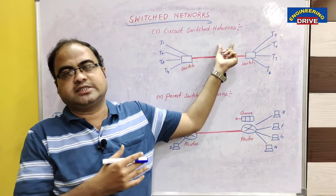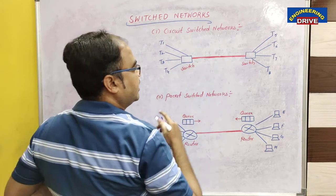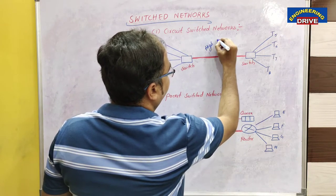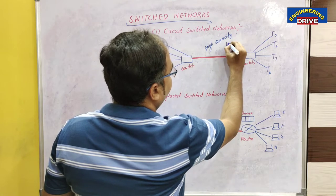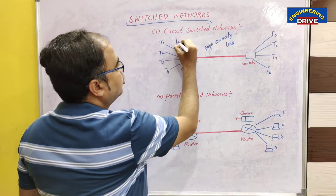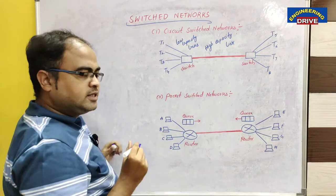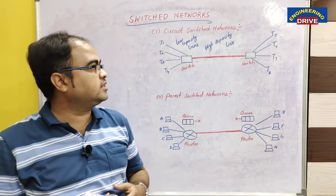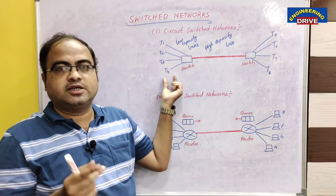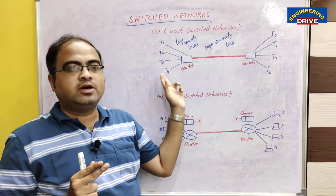There is one link kept between the sender and receiver telephones, and this is not a normal link — it is a high capacity link. The links connected to the individual telephones are low capacity links. The difference is that the high capacity link will transmit data at a much higher rate compared to the low capacity links.